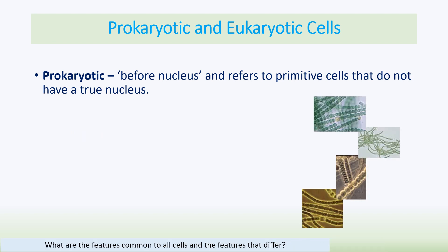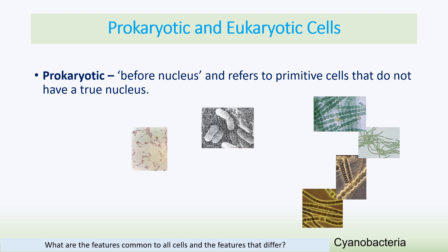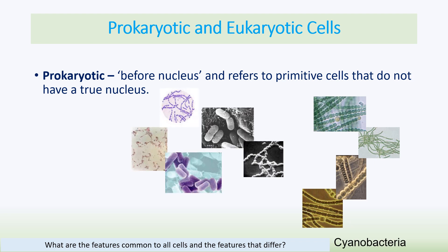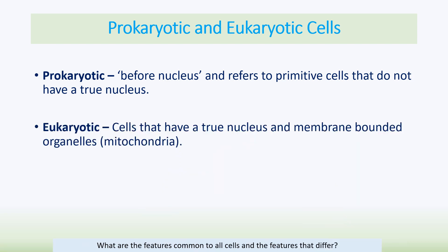Here are some examples of different prokaryotic cells. As you can see, they are very simplistic. Don't forget they can be unicellular — they generally exist on their own.